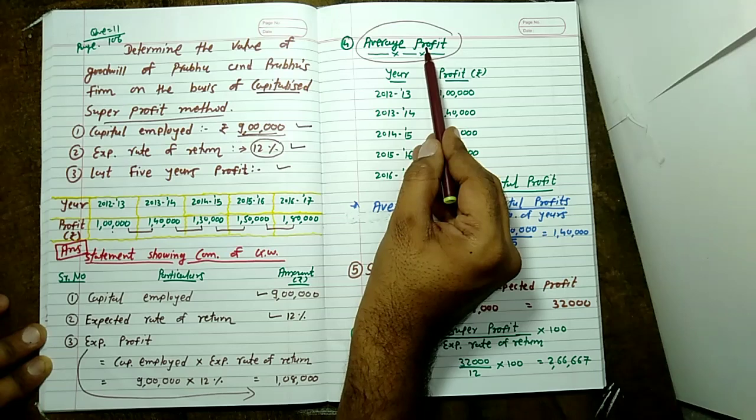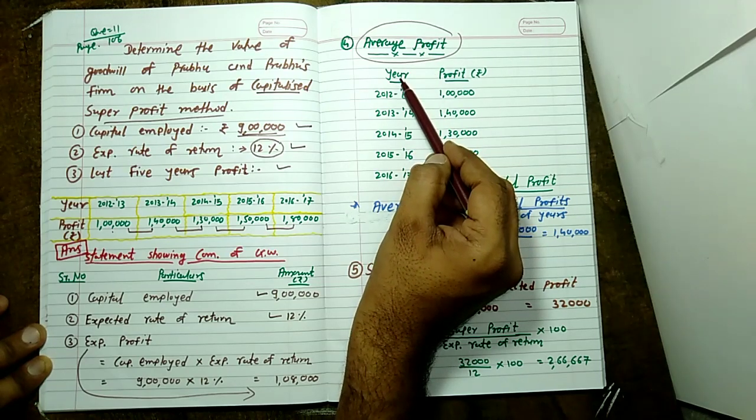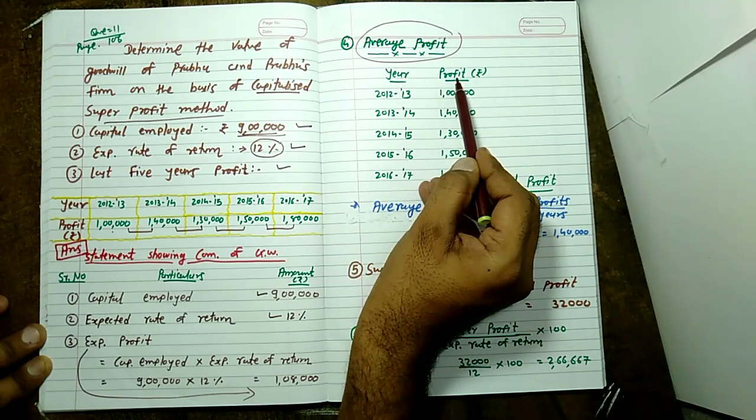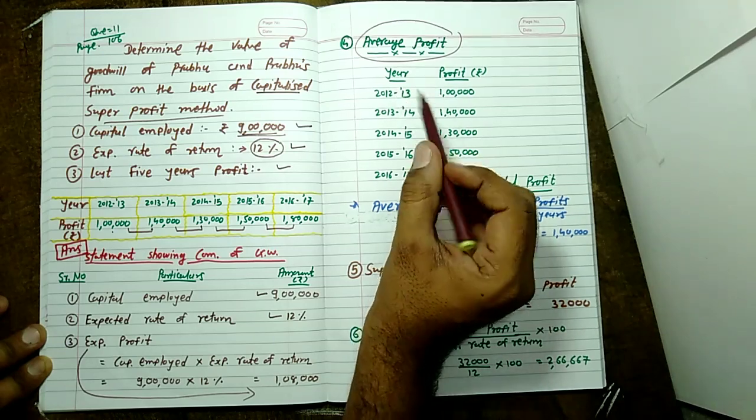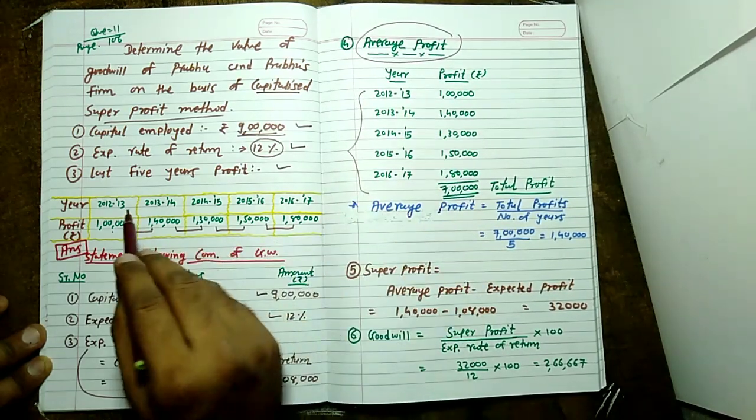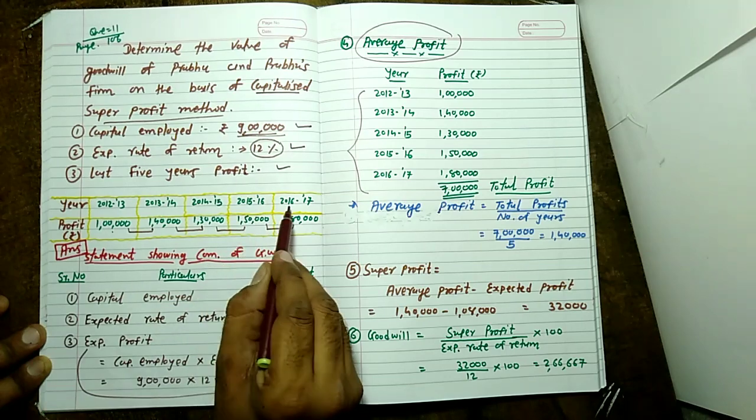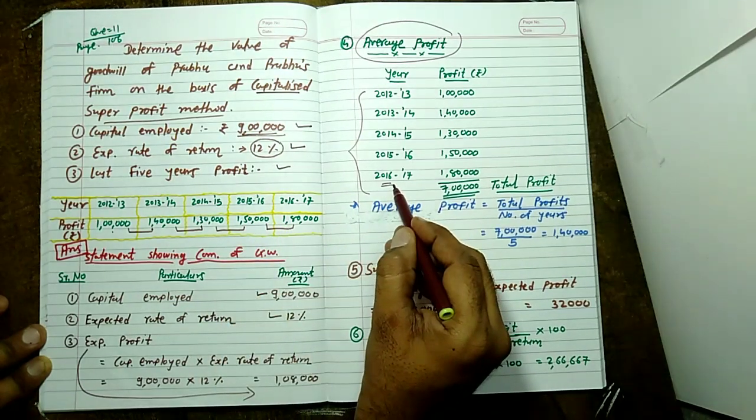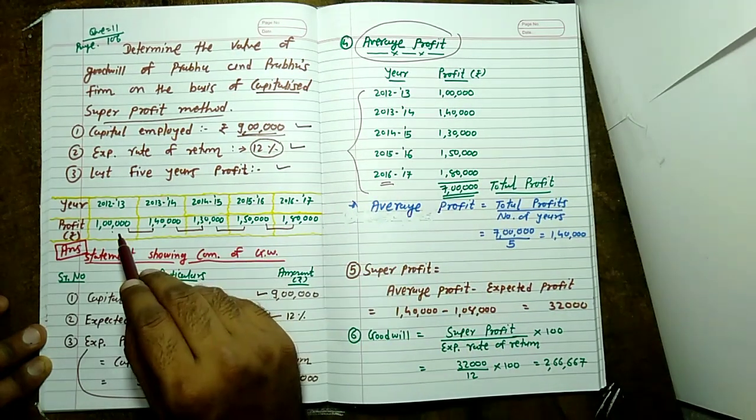Step number four: average profit. In first column year, then after second column profit. In given question: 2012-13, 2013-14, 2014-15, 2015-16, 2016-17. In second column profit: 1 lakh,